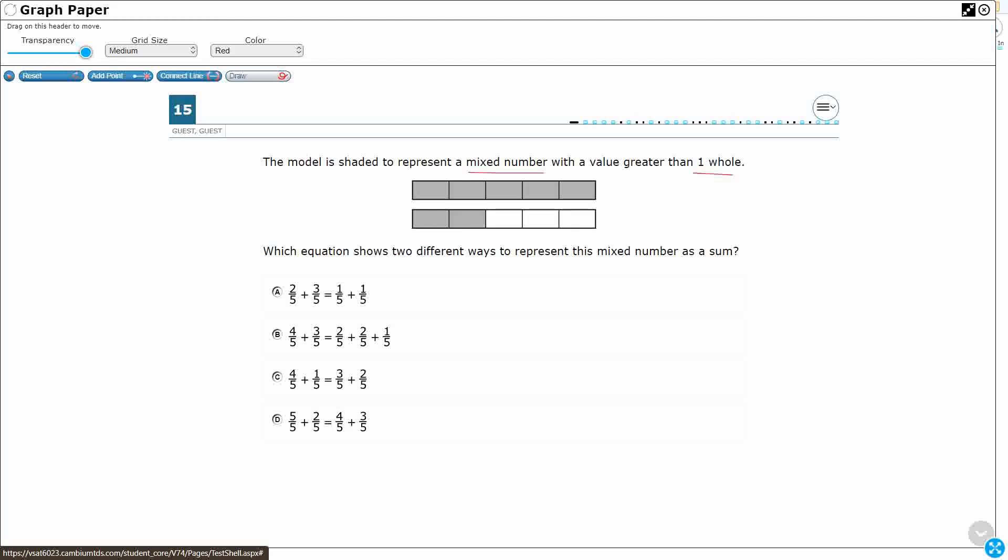But since we know it's a mixed number, a mixed number has got like a big whole number and then a fraction right next to it. Well, it looks like it's pretty obvious that they're using this right here as your whole. So that is one whole bar that is shaded in, and then what is left of this second one?